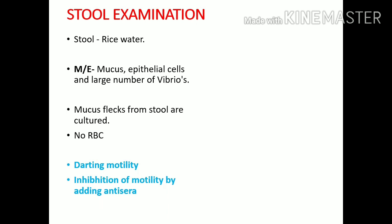Darting motility is a very important finding — the bacteria moves very fast. Since darting motility alone can be confusing for diagnosis, we confirm it by inhibiting the motility with antisera. When the antisera is added, motility is inhibited immediately, confirming the case of Vibrio cholerae.